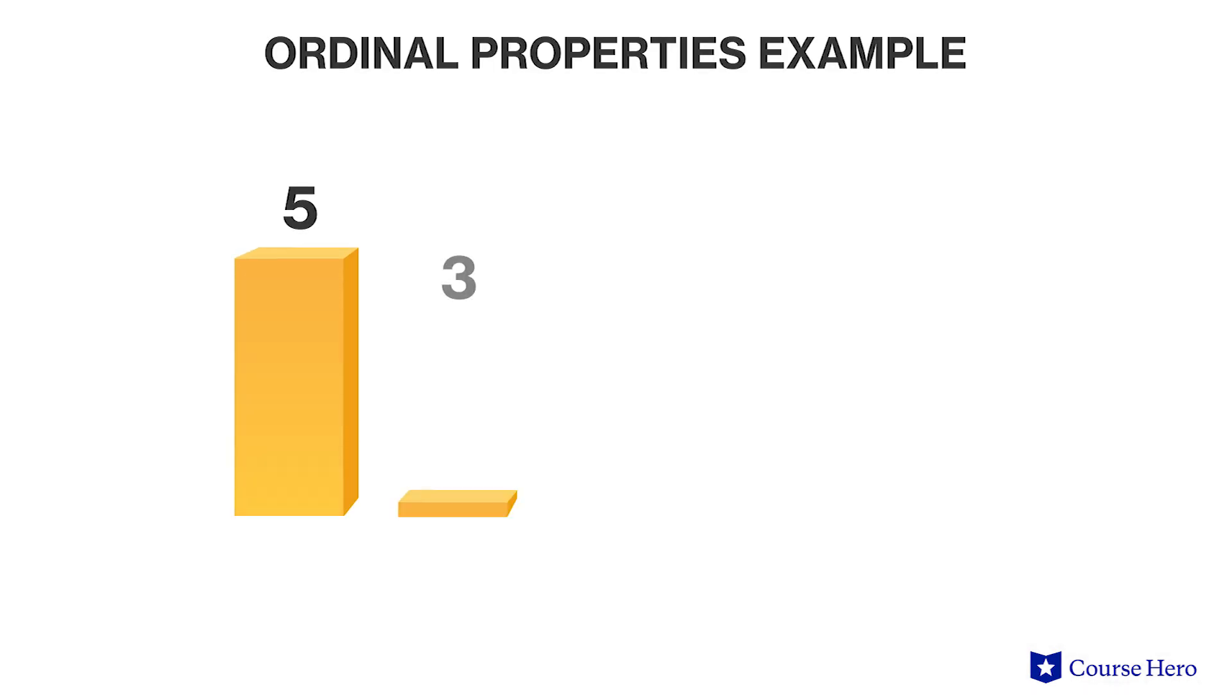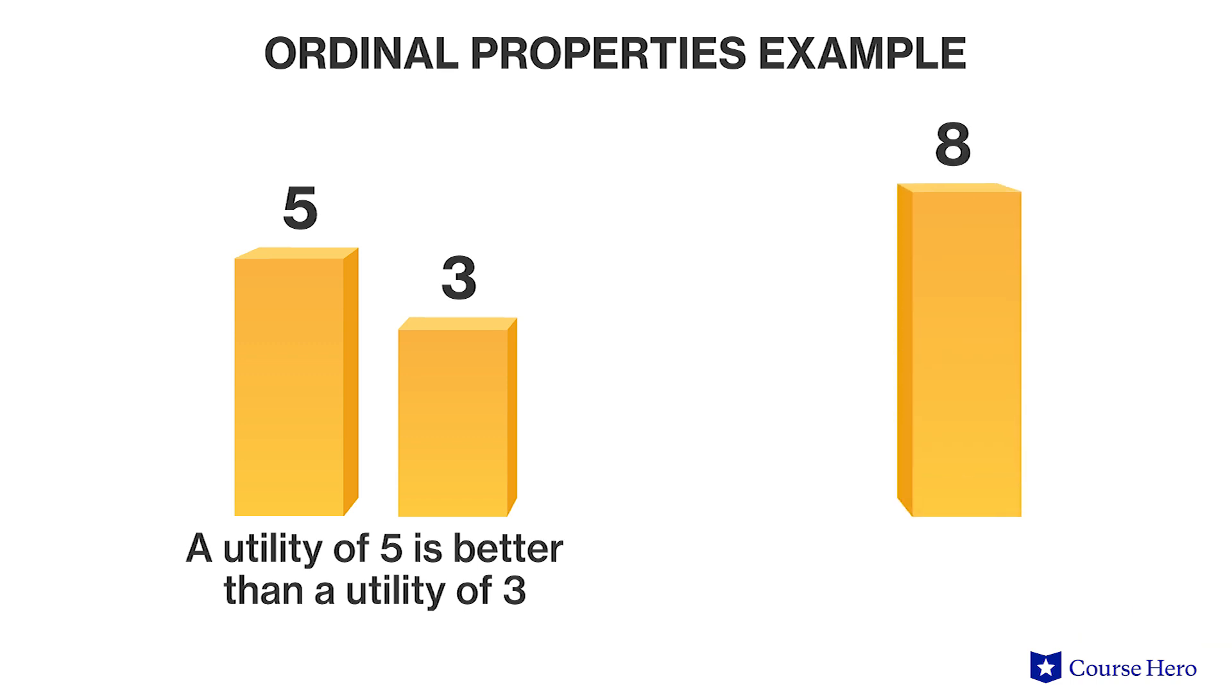In contrast, the second part of the statement, that utility does not have cardinal properties, means utilities cannot be added or subtracted. In other words, a utility of five and a utility of three do not combine to give utility of eight. A related property is that a utility of eight is twice as good as a utility of four, and so on. In order to determine cardinal properties, it is necessary to be able to use arithmetic. There needs to be numerical values given to the utility of options that are being compared.